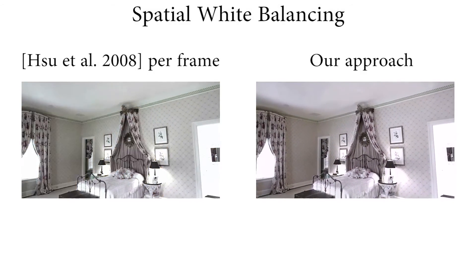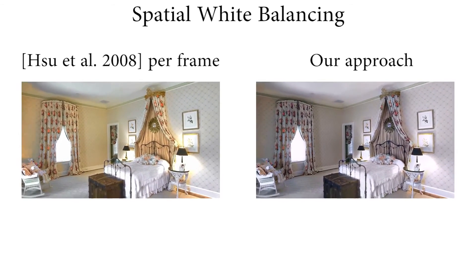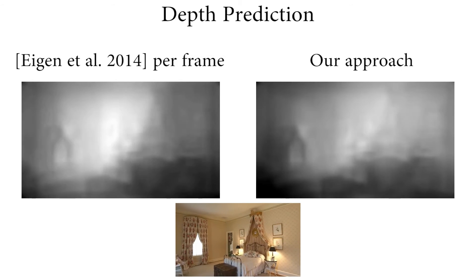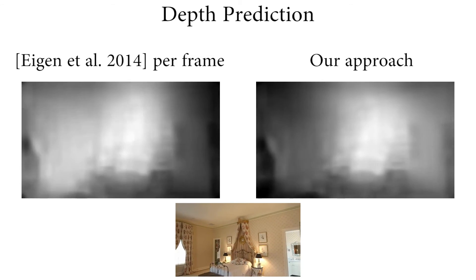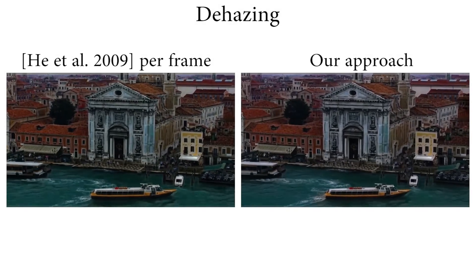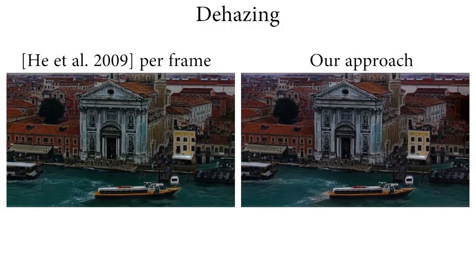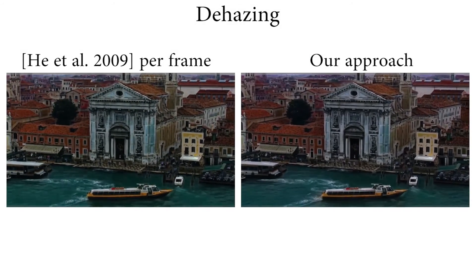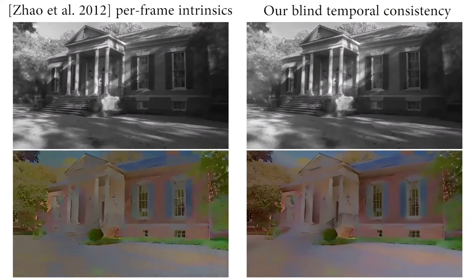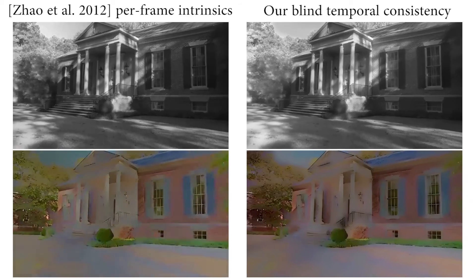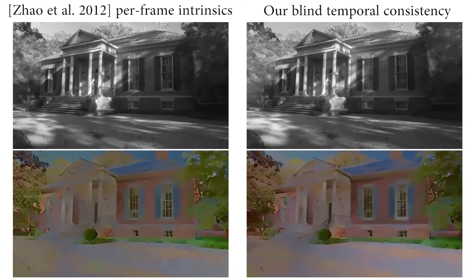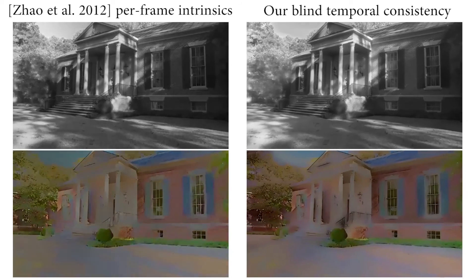We include over 40 applications of real-world videos with more than 10 different image processing algorithms. In conclusion, our apparently simple temporal consistency formulation performs a sophisticated differentiation between high and low frequencies, allowing stabilisation without degrading content. This allows us to show that even an approach which is blind to the underlying image processing algorithm can still achieve state-of-the-art, temporally consistent results.